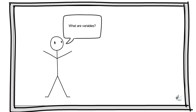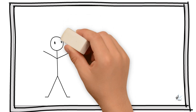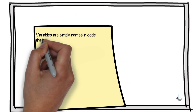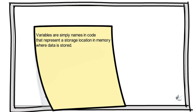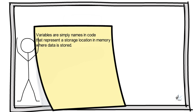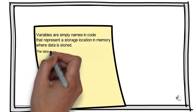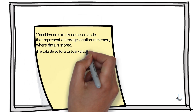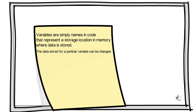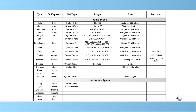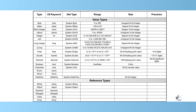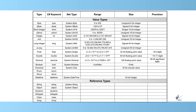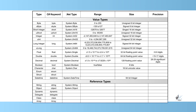What are variables? Variables are simply names in code that represent a storage location in memory where data is stored. This data stored for a particular variable can be changed. Each variable in C-Sharp needs to have a specific type, which determines the size and layout of the variable's memory.